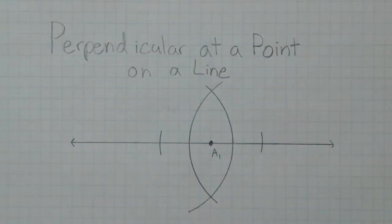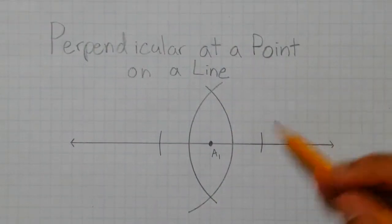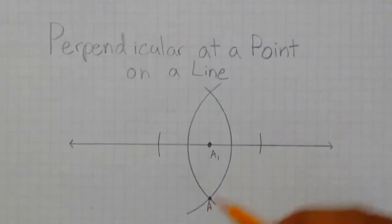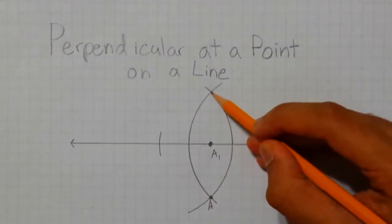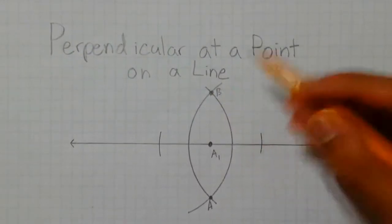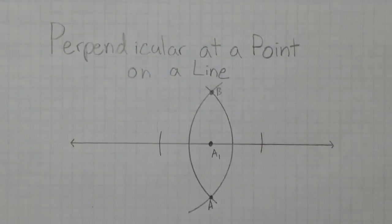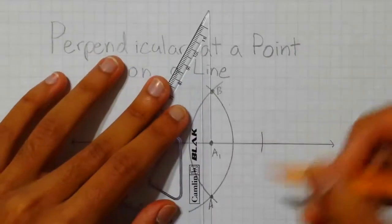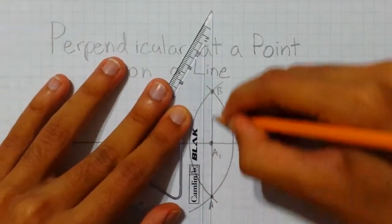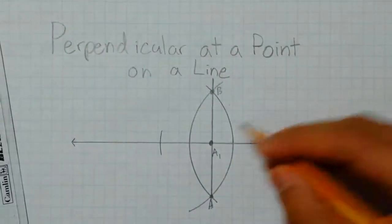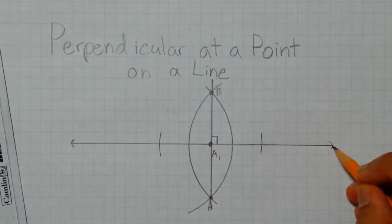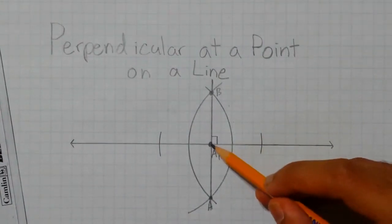Again, the intersection of these two arcs gives us two points, which we can label as A and B. Then by connecting A and B, we form a perpendicular line through our original line at point A.